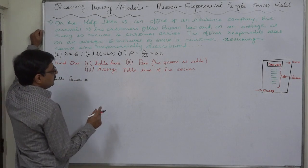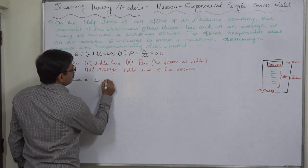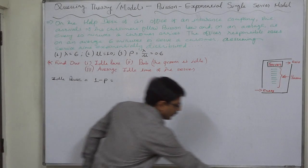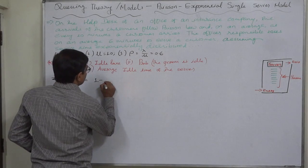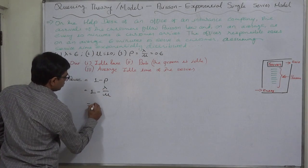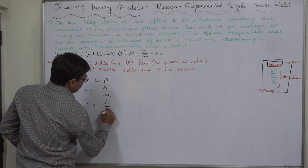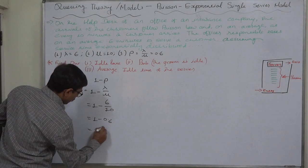Idle rate is 1 minus rho or 1 minus utilization rate. That is 1 minus lambda by mu. That is 1 minus 6 by 10. That is 1 minus 0.6. That is 0.4.